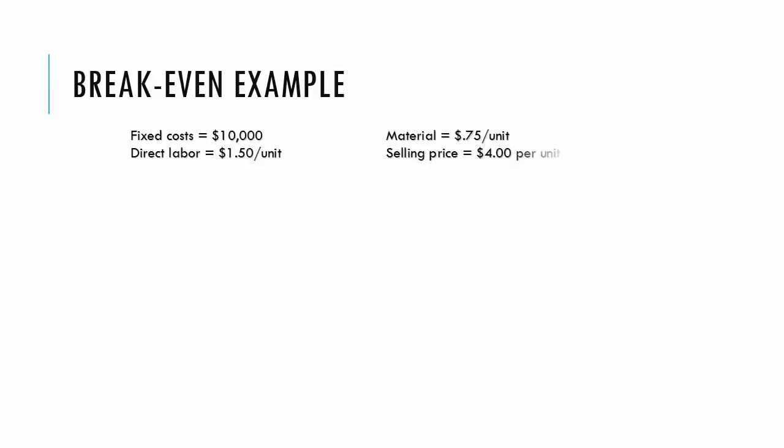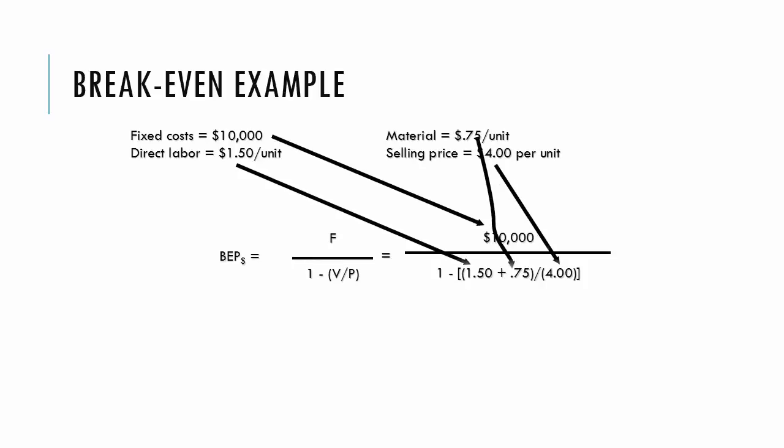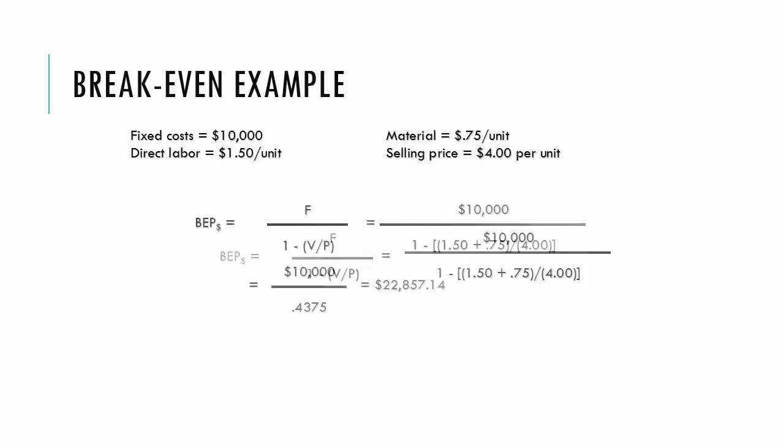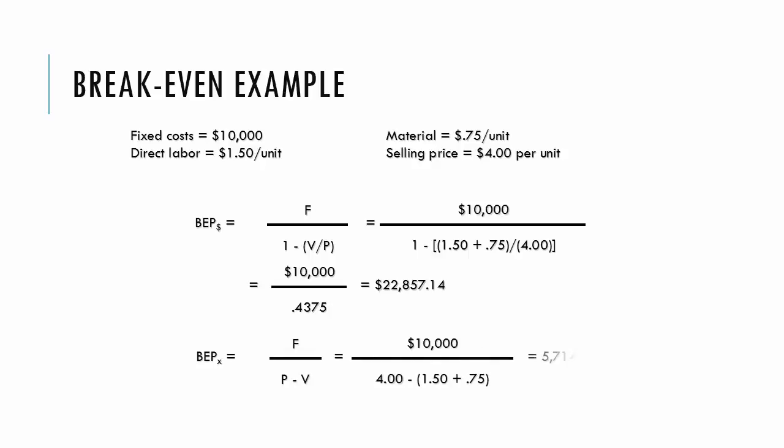For dollars we see the substitutions here. The result is the break-even point in dollars is approximately $22,857.14. While this is useful, I find the break-even point in units more helpful. Here we find it to be approximately 5,714 units. That is we have to produce and sell 5,714 units before we turn a profit.